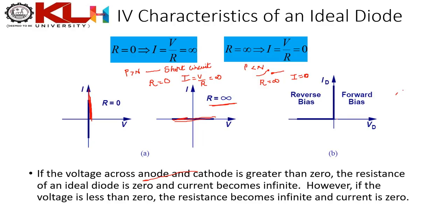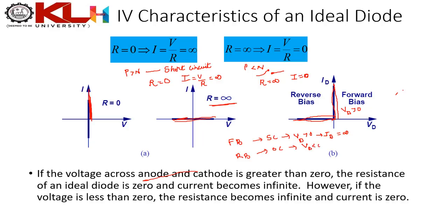These are the ideal IV characteristics of the diode. When V_D > 0, it acts as a short circuit and current → ∞. When V_D < 0, current = 0. In forward bias the diode is replaced by a short circuit (I_D → ∞); in reverse bias it is modeled as an open circuit (I_D = 0).